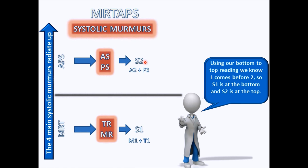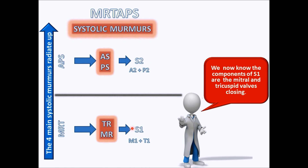They sometimes also ask about the components of each heart sound. The components of S1 are the tricuspid and mitral valves — these are the two valves closing down here that make up the S1 sound. The mitral valve component is called M1 and the tricuspid is T1. Up top, the aortic and pulmonic valves make up S2, referred to as A2 and P2 — when they close together that makes S2.